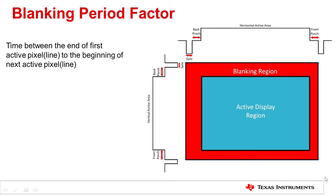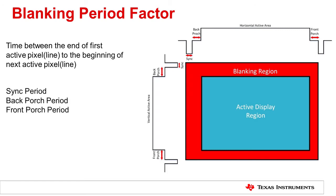Blanking period is the easiest to ignore when trying to calculate pixel clock and data rate, but it is a very important concept. To display the image in the active display region, extra data or signals need to be transmitted to synchronize video lines, restore voltage level, and so on. Sync period, back porch period, and front porch period make up the whole blanking period.